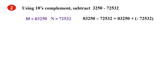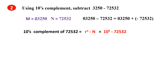The 10's complement of this number — the formula is R to the power N minus N. The base is 10, so 10 to the power 5 (since the number of digits is 5), minus N. When you solve this, you get this as the answer — this is the 10's complement.